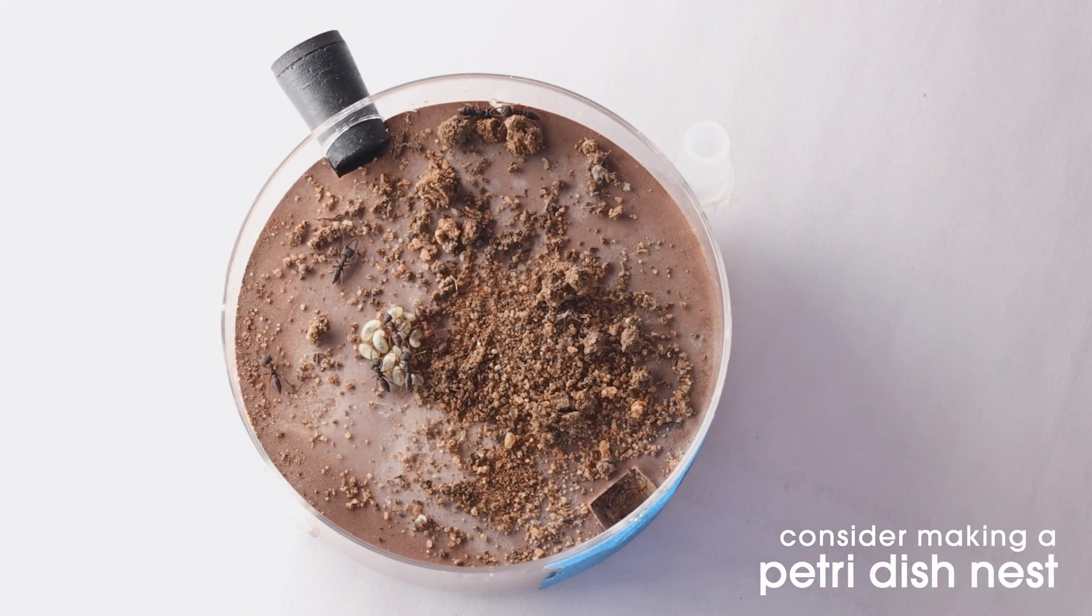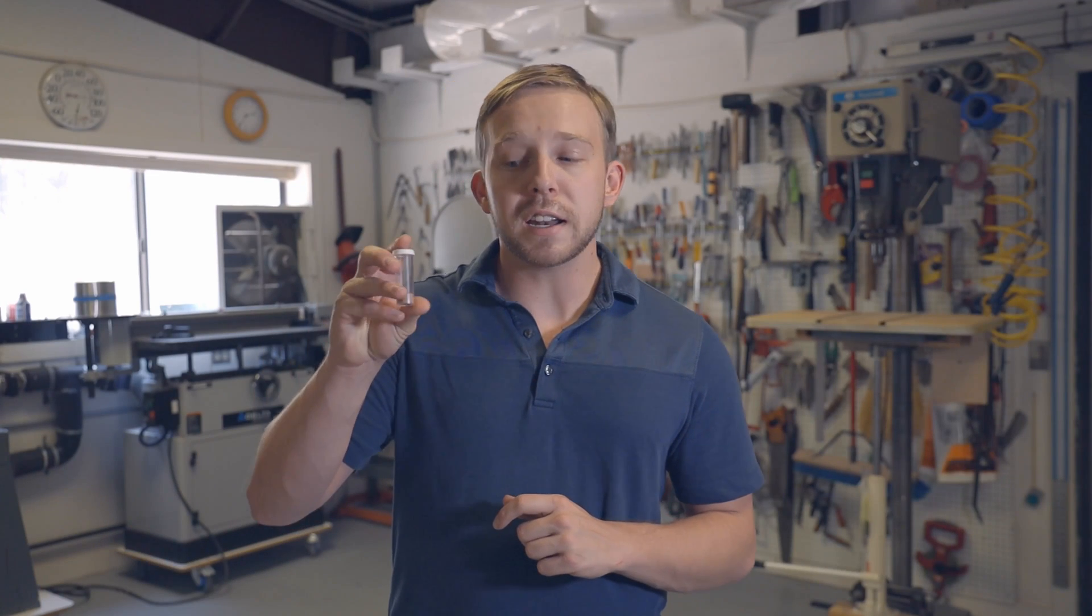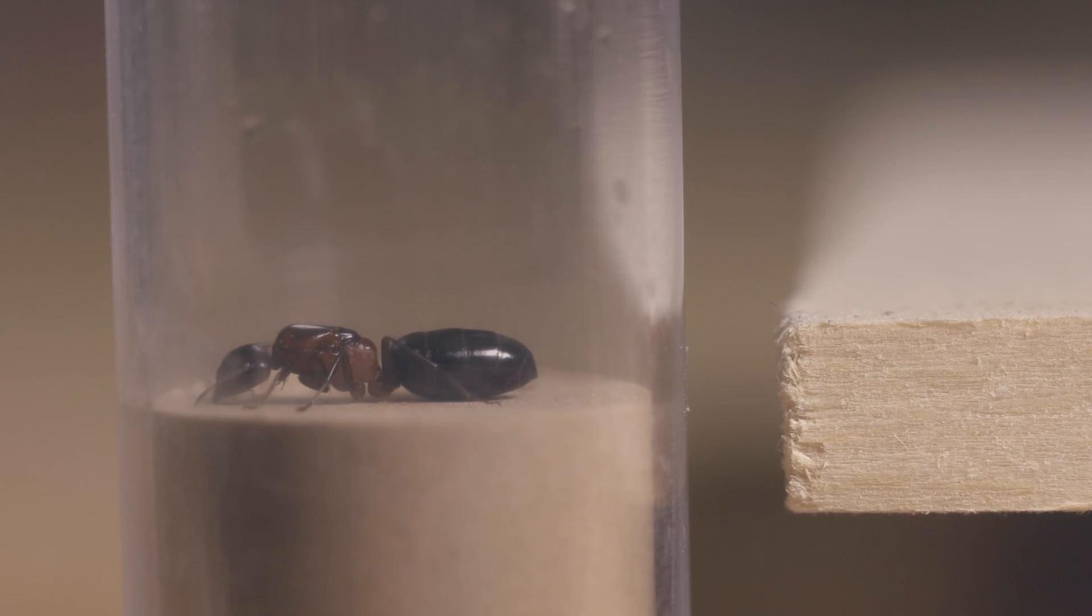Now if you're not sure if your ants are compatible with a wooden nest like the one we're going to make today, I recommend that you stick with something more like our lab style formicarium, the petri dish nests. I recently found this little tiny Camponotus queen, so today I'm going to be designing and building based off of her needs.